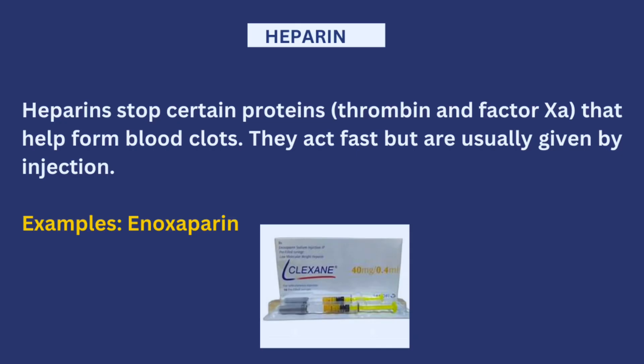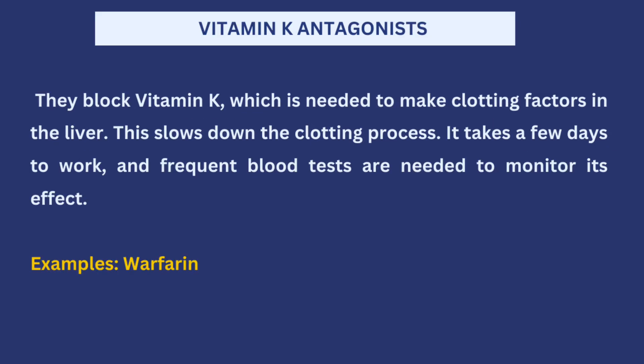I'm going to discuss four different types of anticoagulants in this video, along with examples of medications and how they work. The first type is heparins. Heparins help to stop some proteins needed for the blood clot formation process, like thrombin and factor Xa. A very common example of heparin is the injection known as enoxaparin.